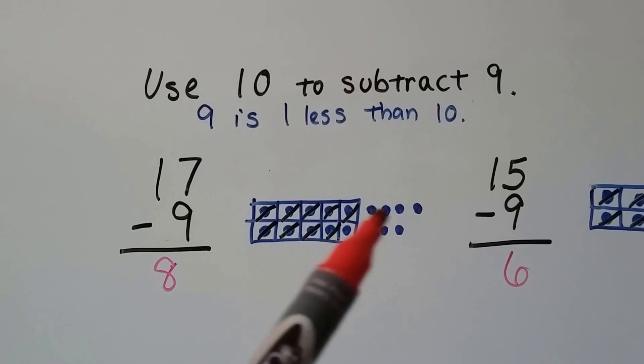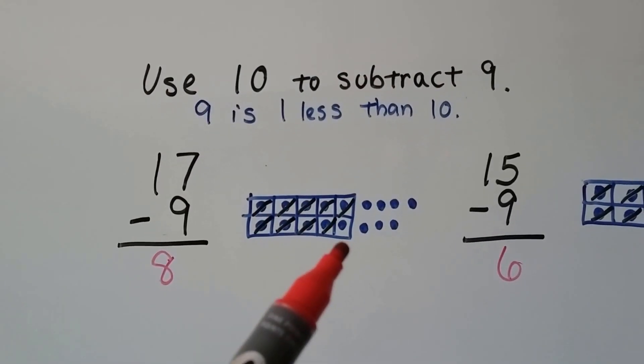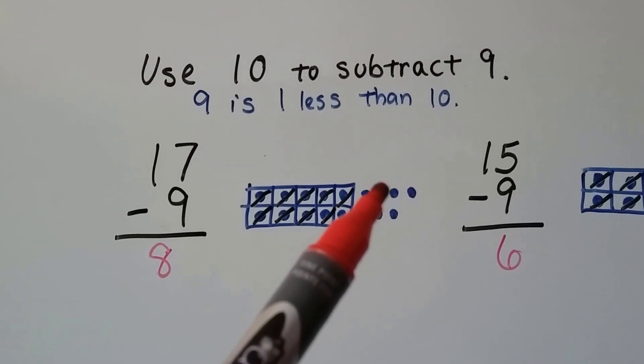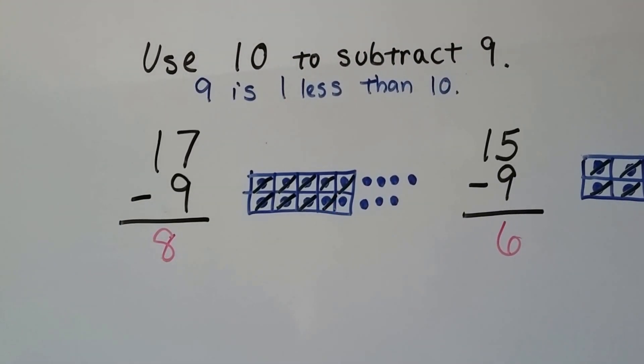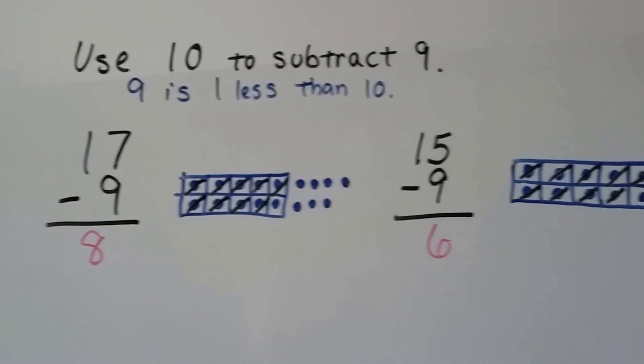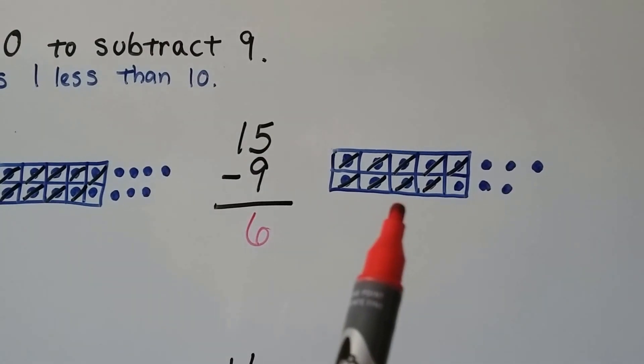If we have 17 minus 9, we have 17 dots. We cross off or remove 9 of them, and we count how many we have: 1, 2, 3, 4, 5, 6, 7, 8. 17 minus 9 is 8. 15 minus 9, we have 15 dots.